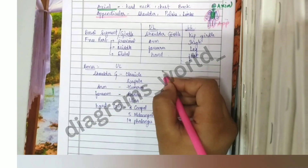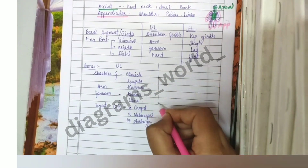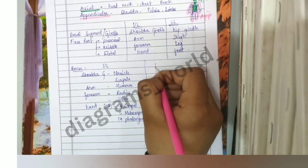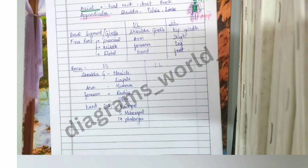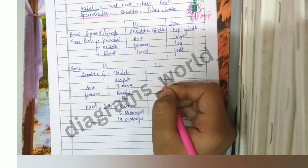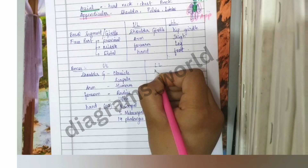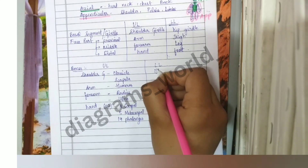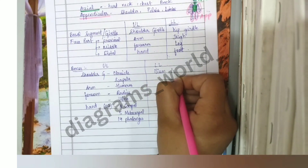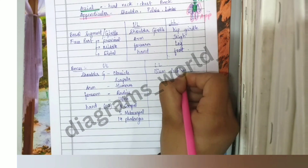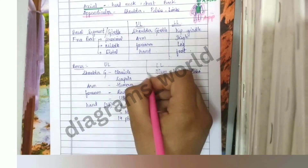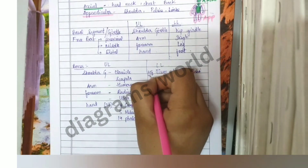In the lower limb, the hip girdle contains the pelvic bone, which is a fused bone composed of three bones: the ilium, ischium, and pubis. This is the hip girdle.